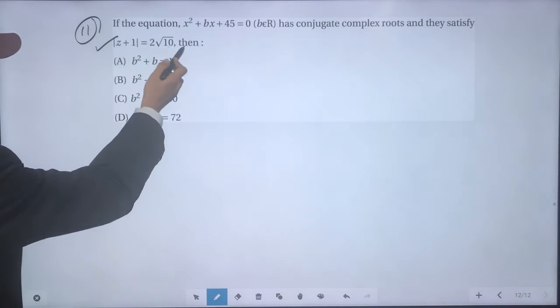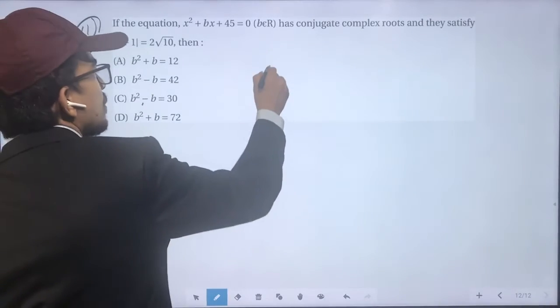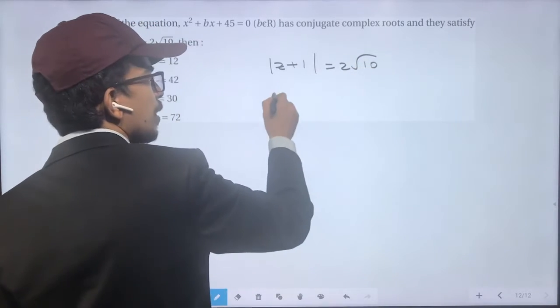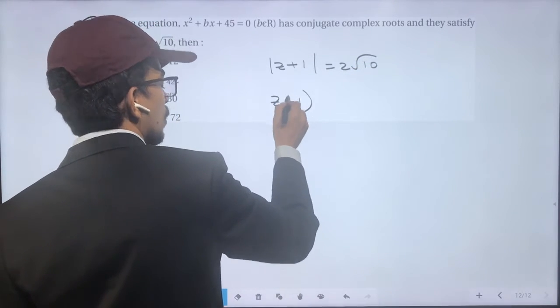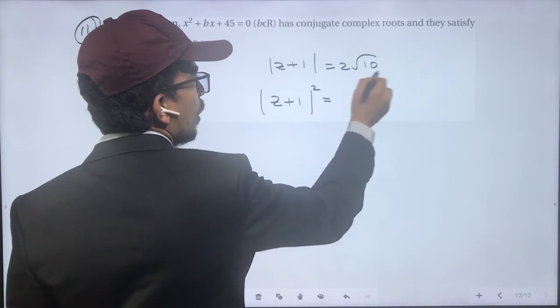|z + 1| = 2√10. Squaring both sides, |z + 1|² = 40.